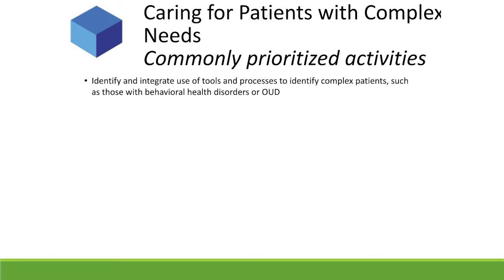What are commonly prioritized activities that clinics do? First, clinics often perceive the need to identify and integrate screening tools and processes to not only identify complex patients — such as those with a behavioral health disorder or opioid use disorder — but also to make that diagnosis. Half of all patients with an opioid use disorder go unrecognized, and half of those who are recognized do not end up in treatment. So it's not just the screening; it's the workflows to make sure patients are getting the appropriate care.